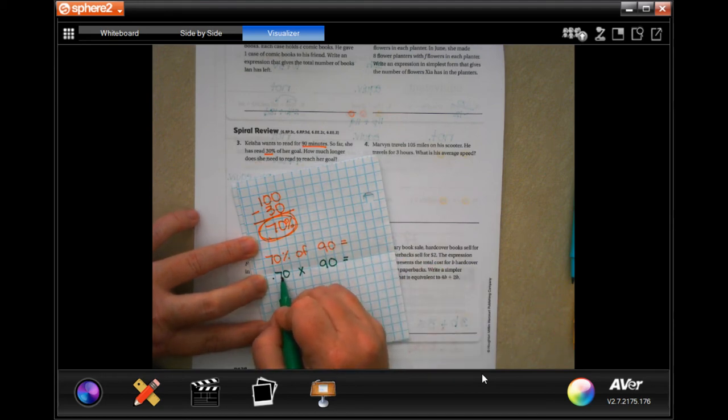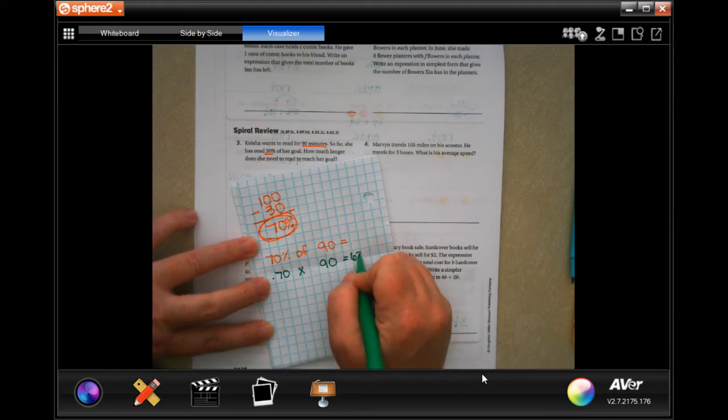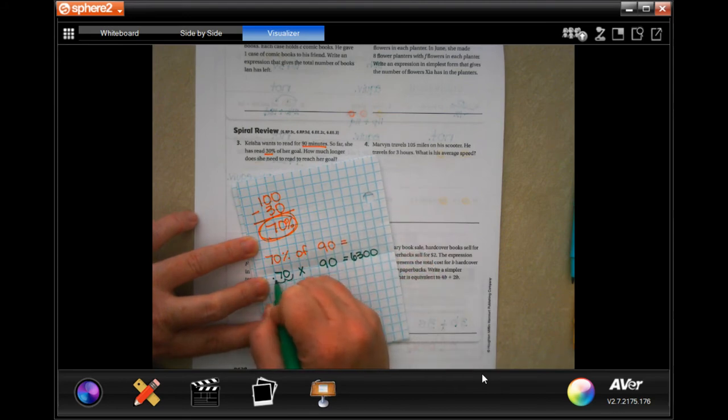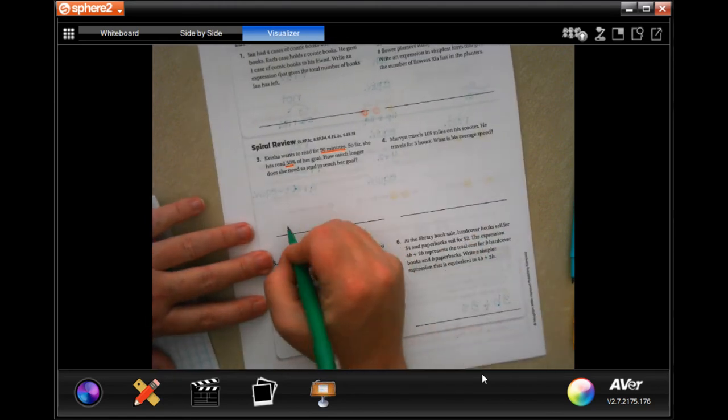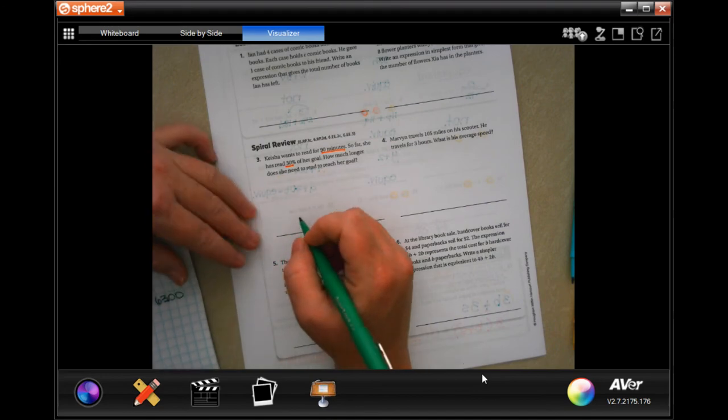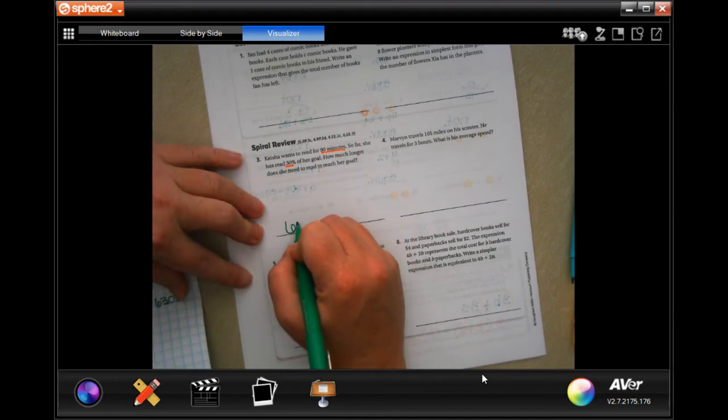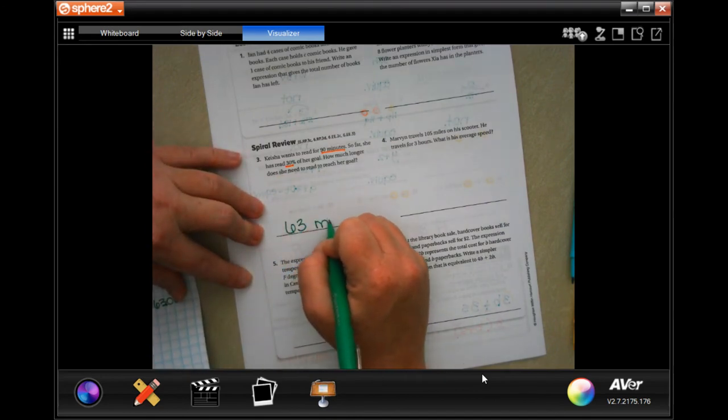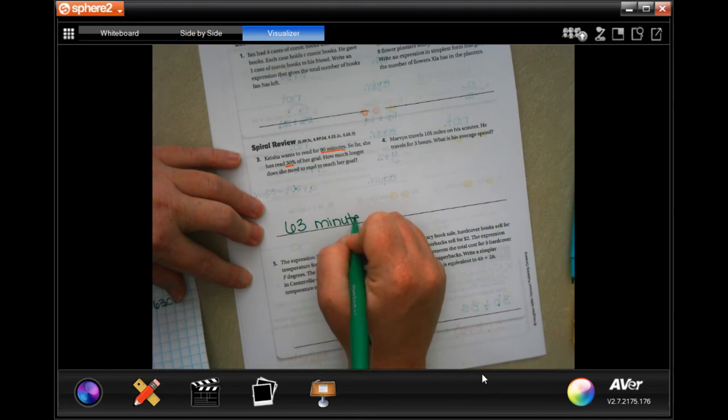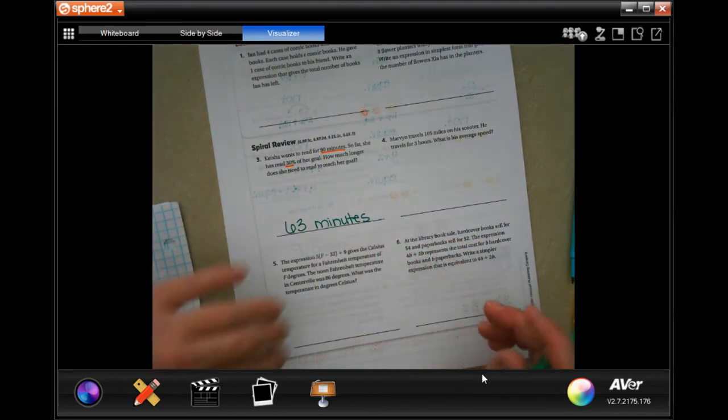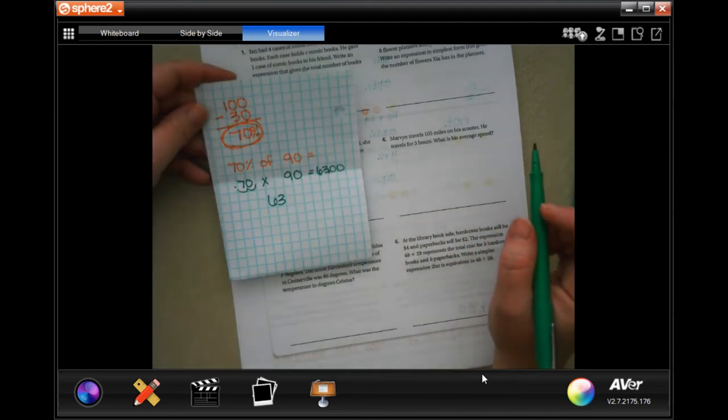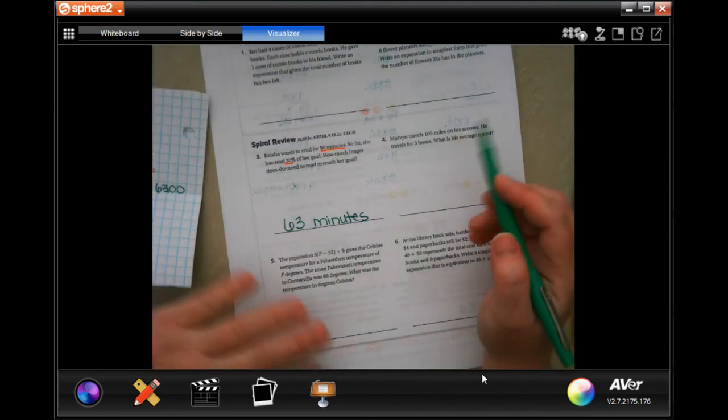Well, 7 times 9 is 63, and then we have the two zeros on the end, and then we have to go in 1, 2 places, 1, 2 places, 63. So 63 minutes. Make sure that you write down your work.